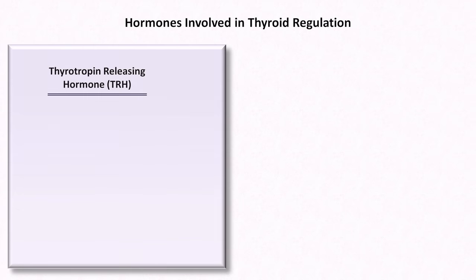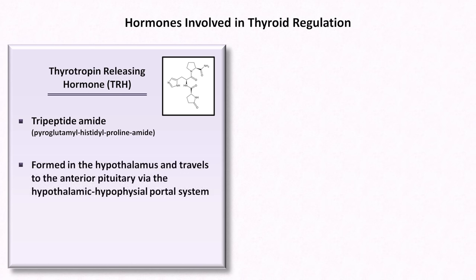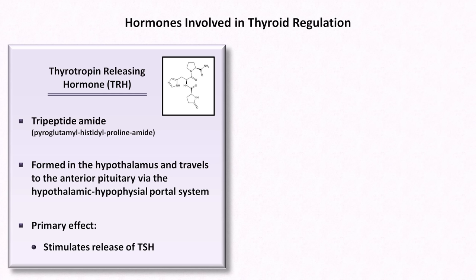The first is Thyrotropin Releasing Hormone, or TRH. TRH is a tripeptide amide, which essentially means it's composed of three amino acids. It's formed in the hypothalamus and travels to the anterior pituitary via the hypothalamic-hypophyseal portal system. The primary effect of TRH is to stimulate the pituitary to release the next hormone in the pathway, TSH. Another effect of TRH, which won't be discussed further in this video, is to stimulate secretion of prolactin.